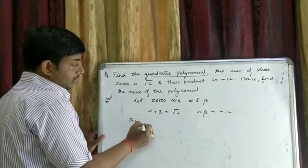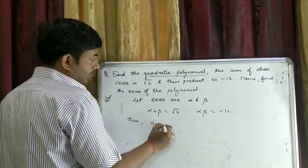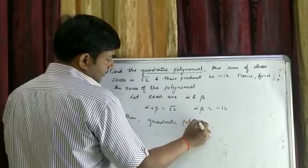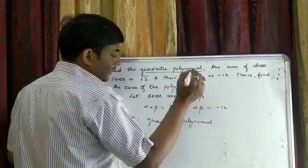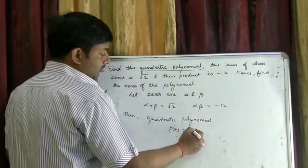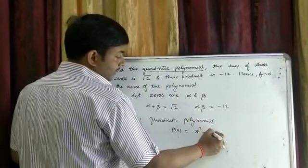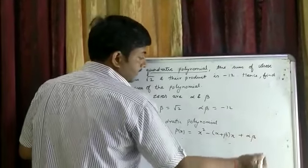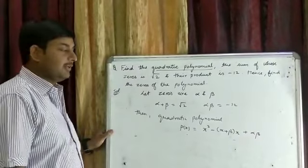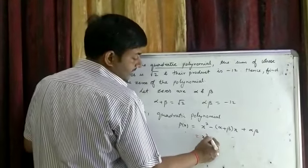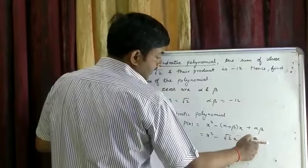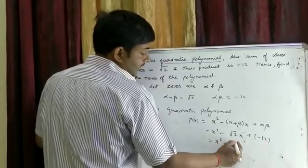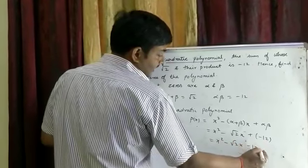Then the quadratic polynomial P(x) equals X squared minus sum of zeros X plus product of zeros. You write here X squared minus root 2 X, and this is minus 12. So it becomes X squared minus root 2 X minus 12. This is your quadratic polynomial.